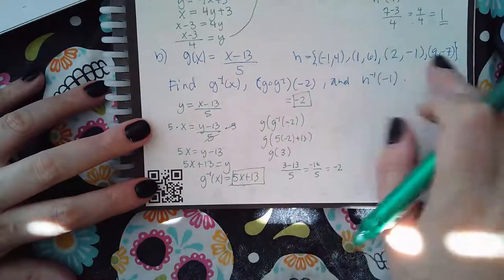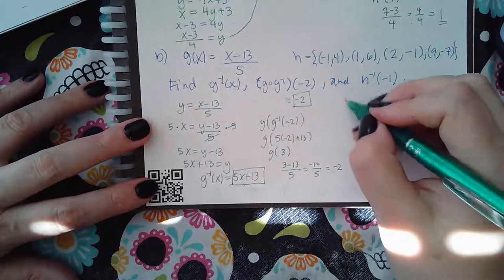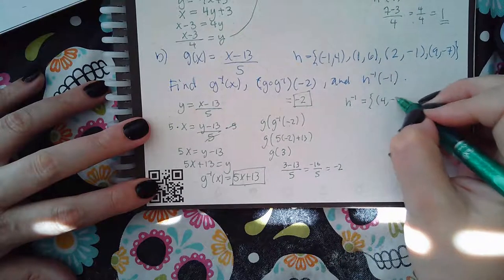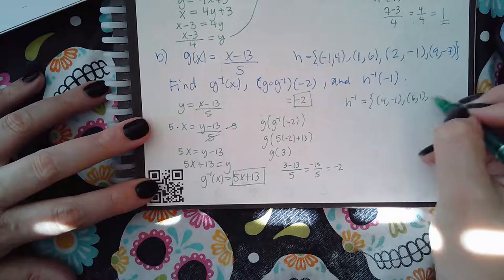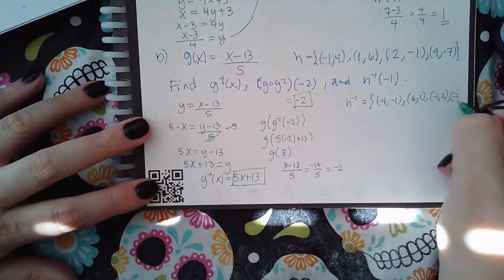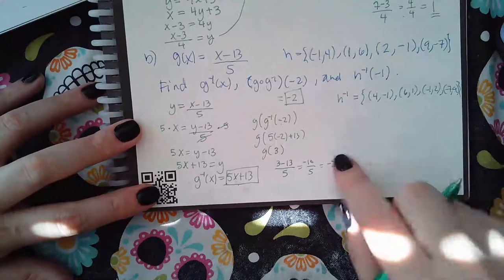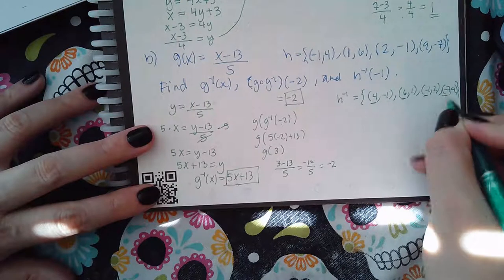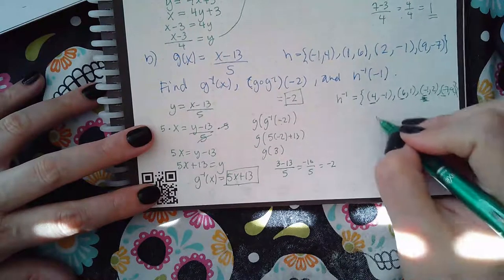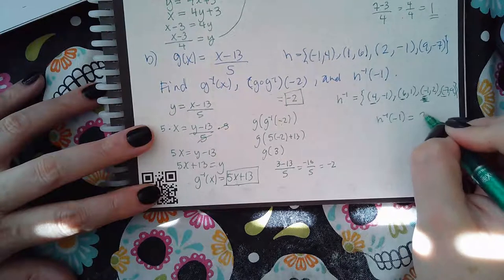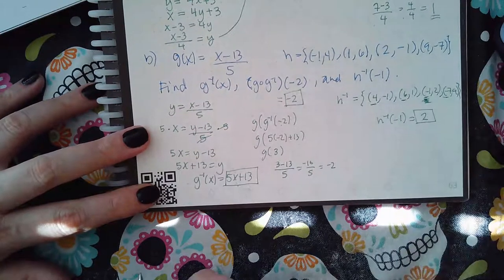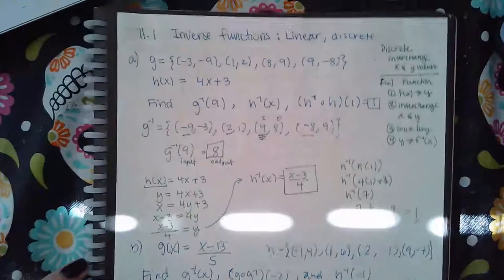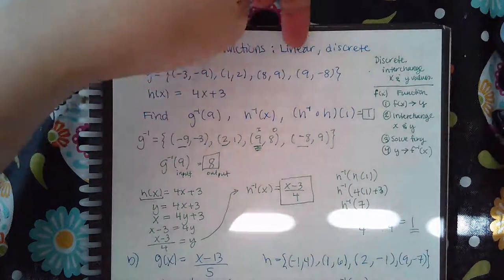For h inverse of negative 1, we need to find what h inverse looks like, so interchange every single x and y value. Now find the input that is negative 1 — that's this one — and the output is positive 2. So h inverse of negative 1 equals 2. That's how you work on inverse functions, whether they're linear or discrete.